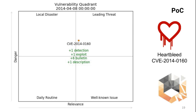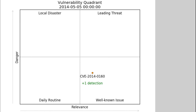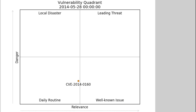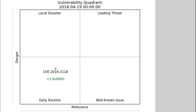I gave these names to the four quadrants: leading threats, local disaster, well-known issue, and daily routine. Here is, for example, the vulnerability quadrant for Heartbleed. And this one is for Badlock. As you can see, unlike Heartbleed, Badlock was never a leading threat.